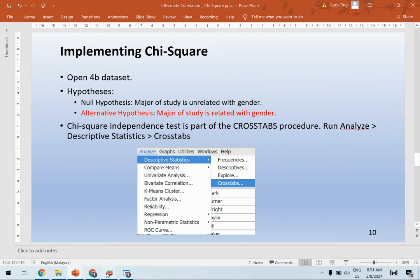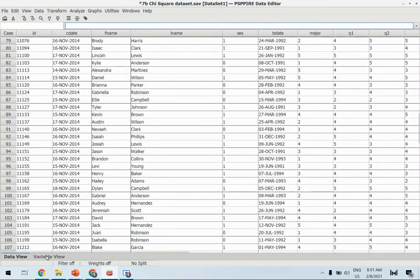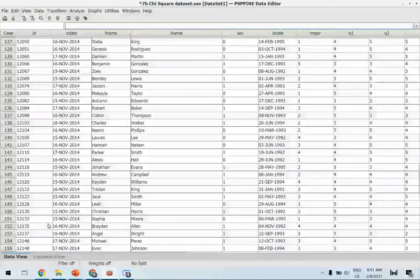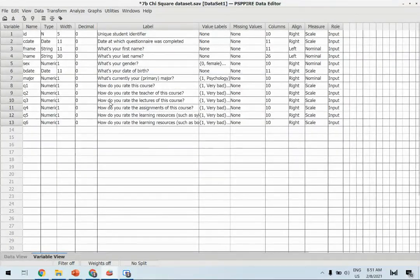So let's run this dataset. We can see that there are altogether 183 samples here, and under the variable view we have gender and also we have major.